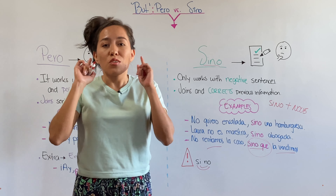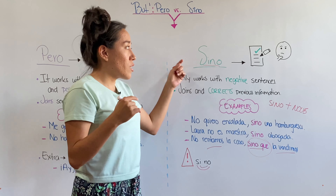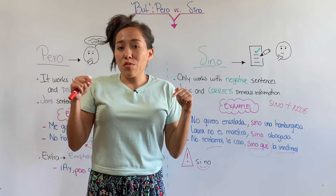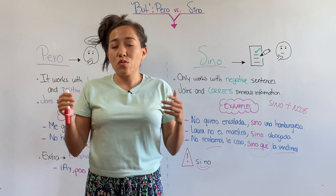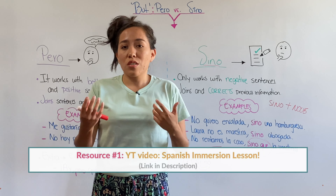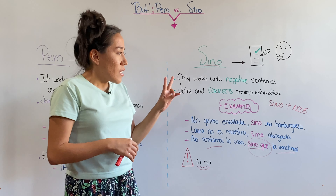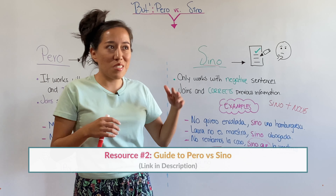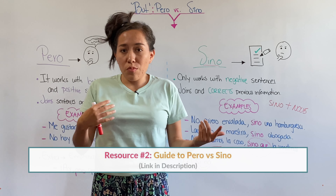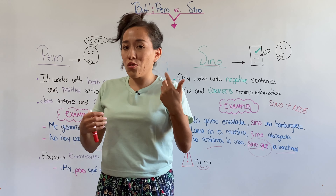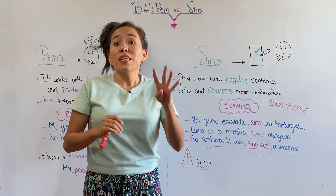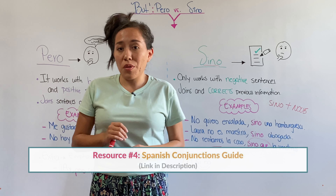Before we finish, here's a pronunciation and conversation tip. 'Sino' as a single word carries the meaning we just discussed. However, you will also find sentences where 'sino' is written as two words: 'si no'. In that case, you're using those two words to create conditional sentences. For example: 'si no llueve voy a ir' — if it doesn't rain I'm going to go. Pay attention to the context and the pronunciation to determine which word is being used.